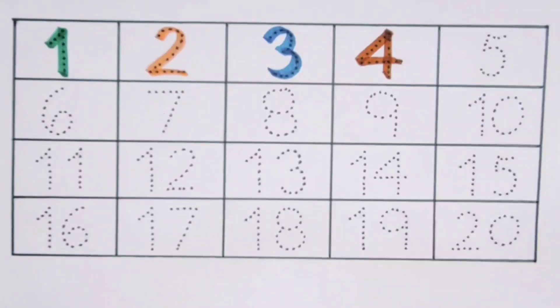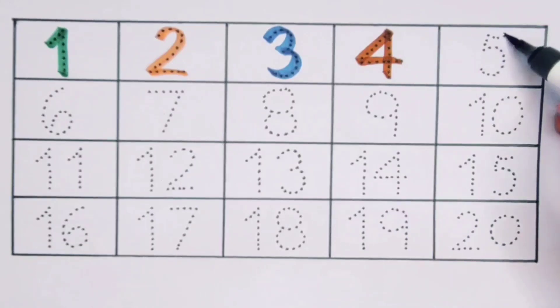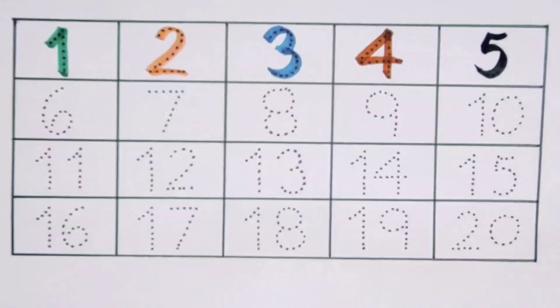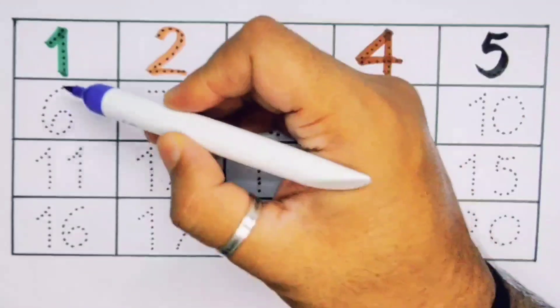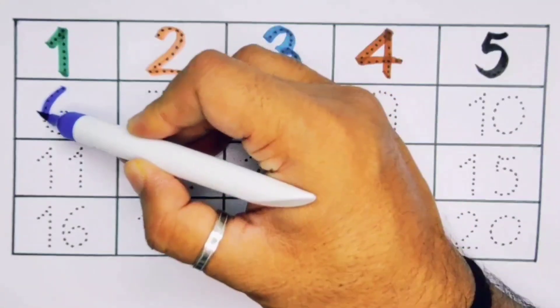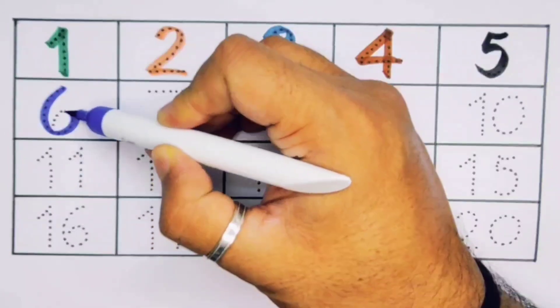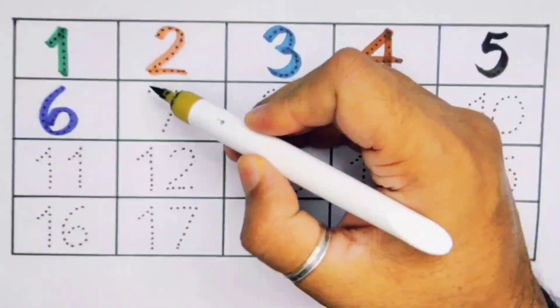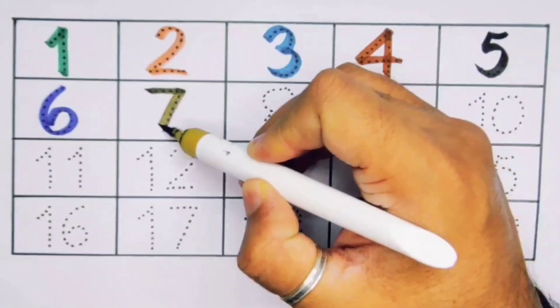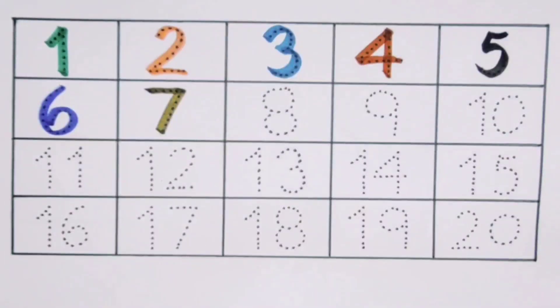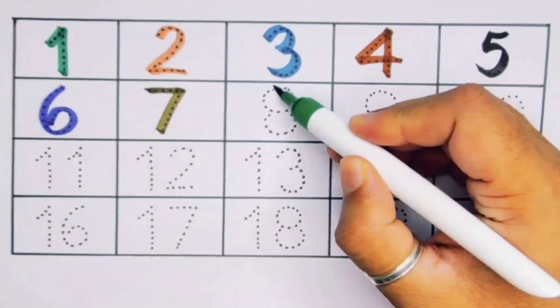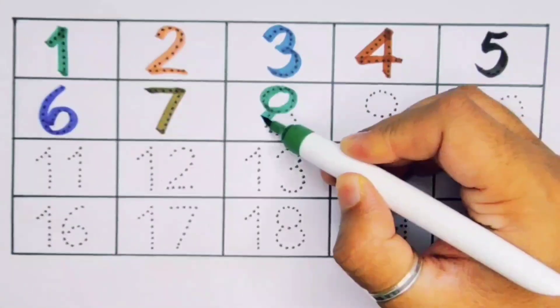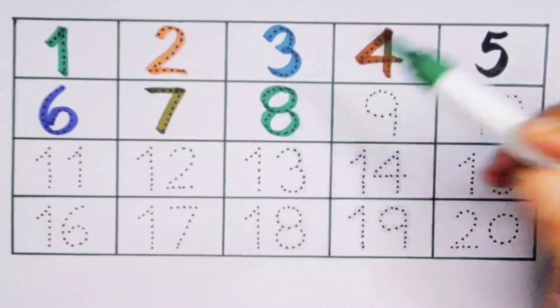Next, it's 5, number 5. Next, 6, number 6. Next kids, it's 7, number 7. Next, 8, number 8.